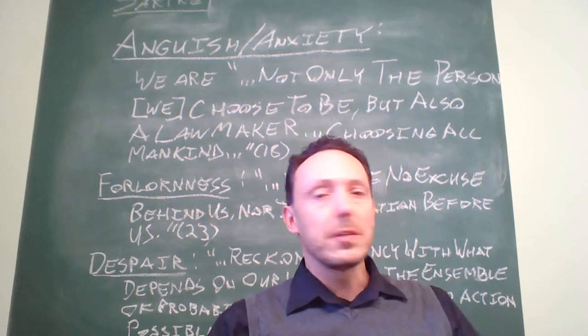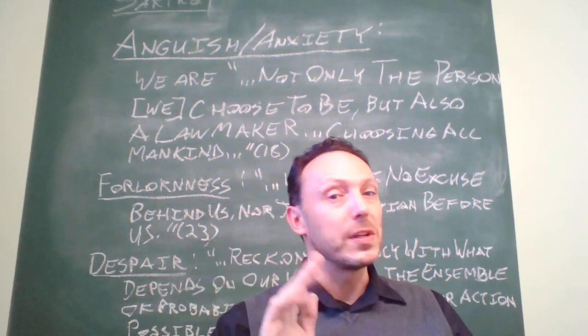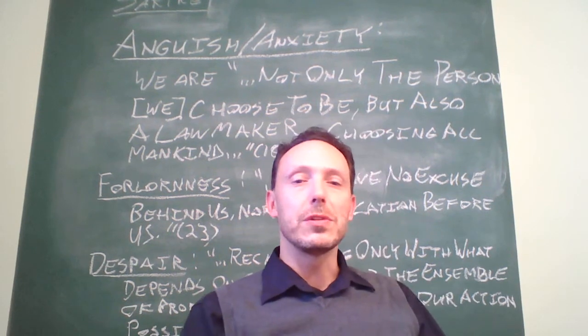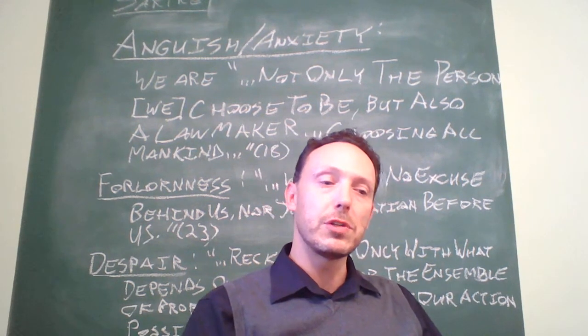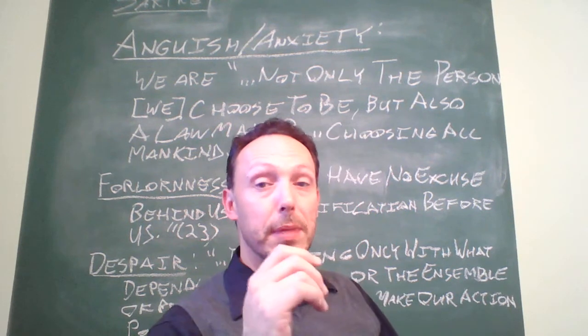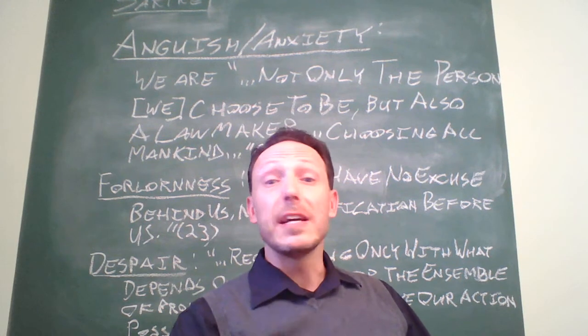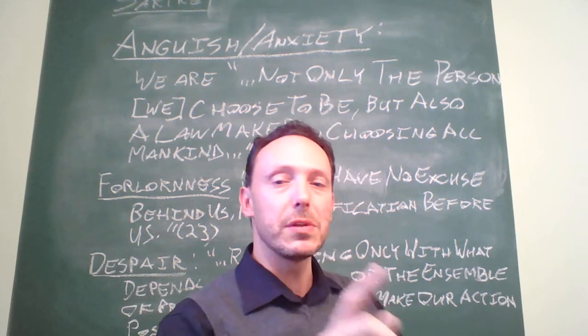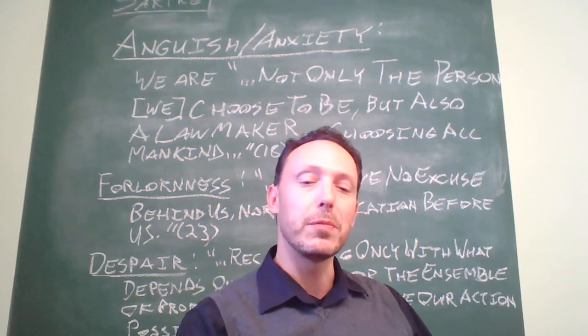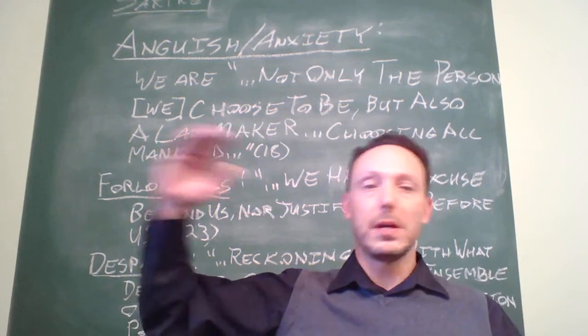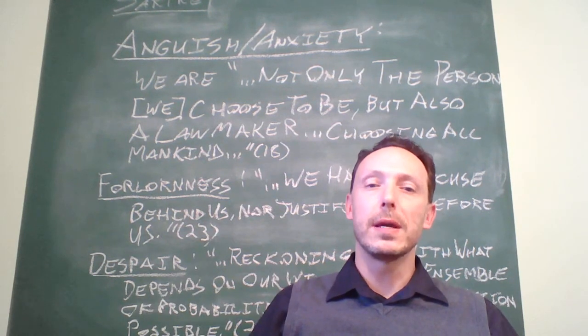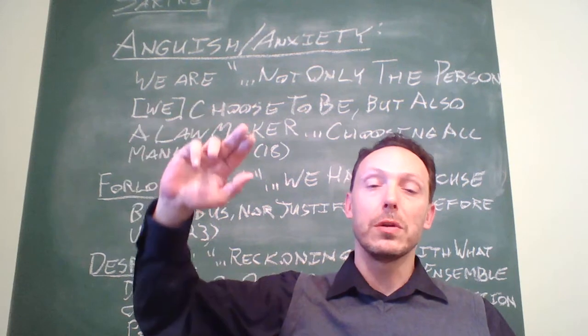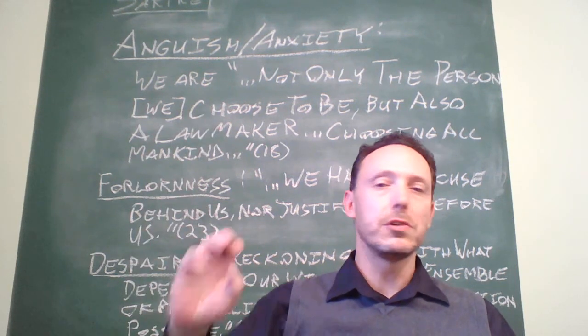For Kant, because we have this particular kind of freedom, this rational autonomy, this ability to limit our desires and act in terms of the formulations of the categorical imperative, every time we come to a judgment as a result of these formulations, we are effectively legislating universal moral law. When we make a judgment like that, we're not just holding ourselves to our own individual standard, but rather we are legislating for all of mankind.